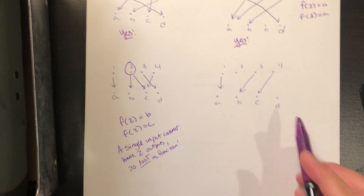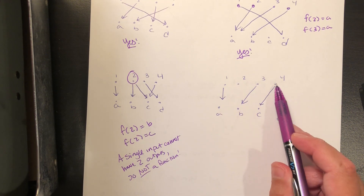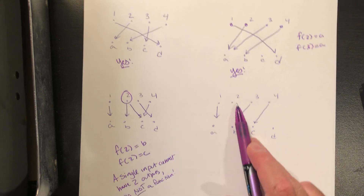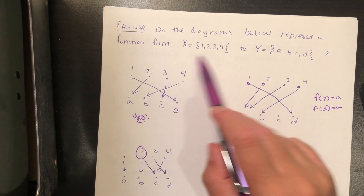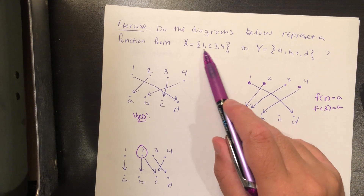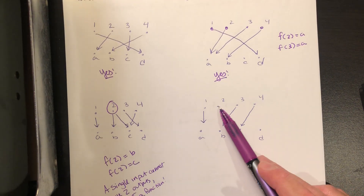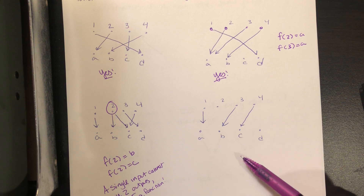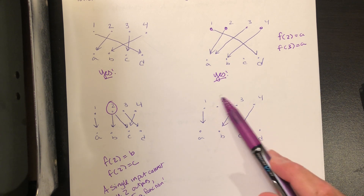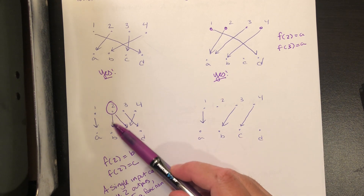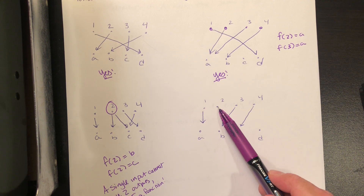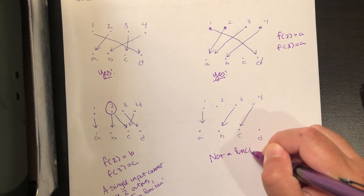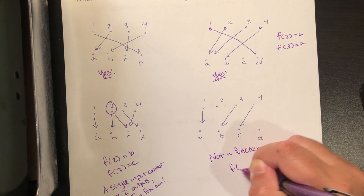Finally, in the fourth diagram, we have a single arrow coming out of 1, 3, and 4. But what about 2? Remember, the domain is 1, 2, 3, and 4. If you have an element of the domain that's not being sent anywhere, this is not a good function either — 2 doesn't know where to go. So this is not a function because F of 2 is undefined.